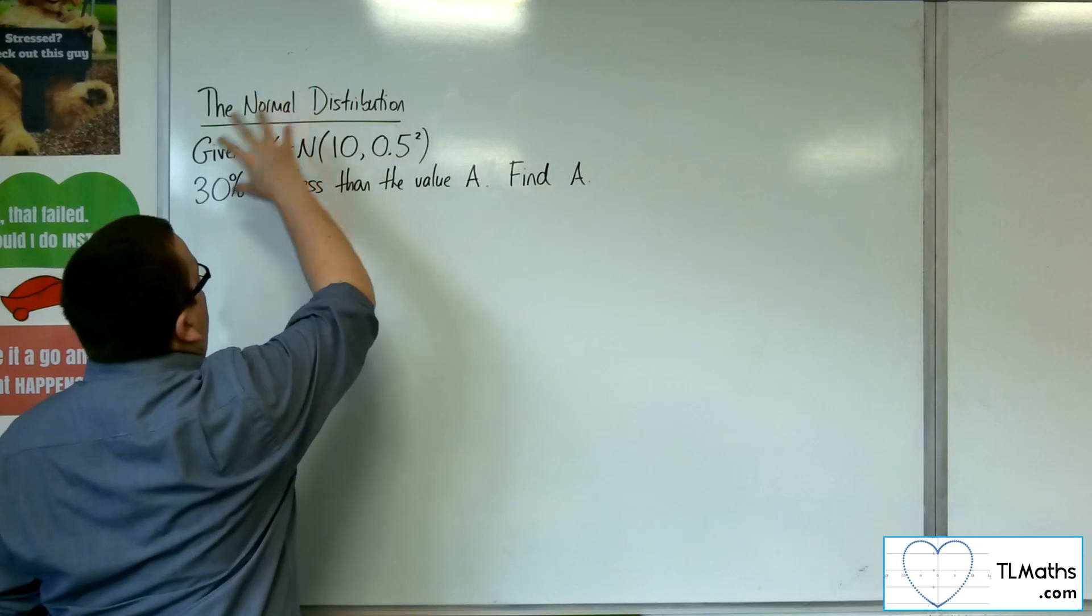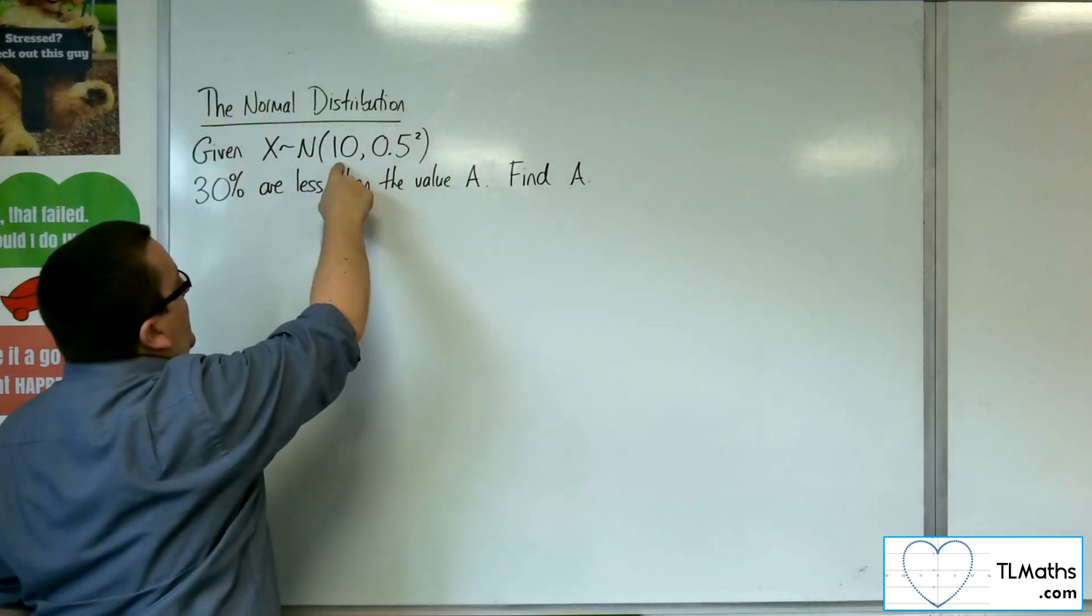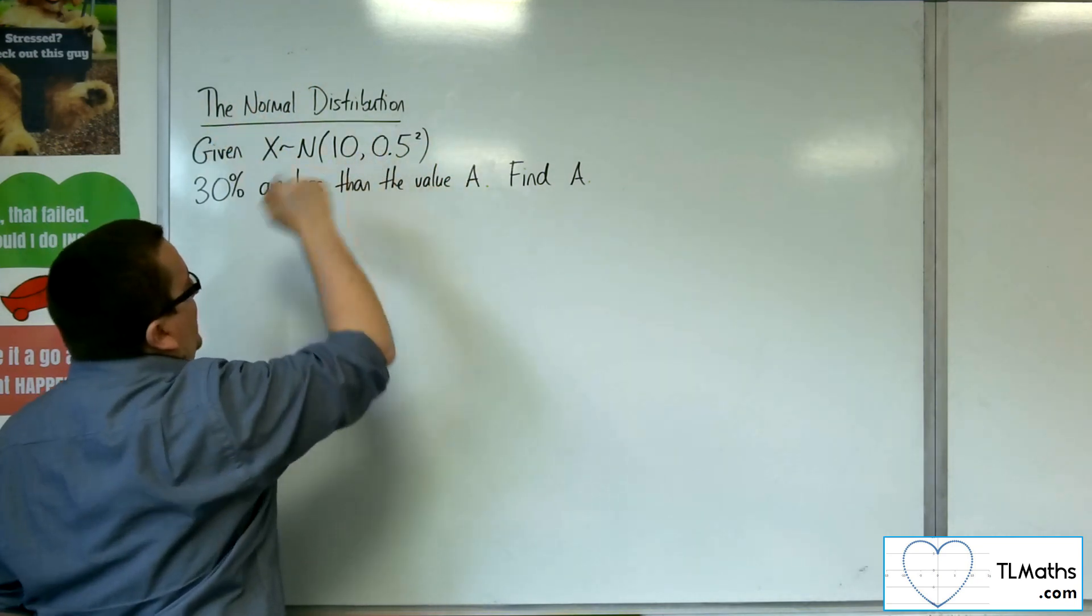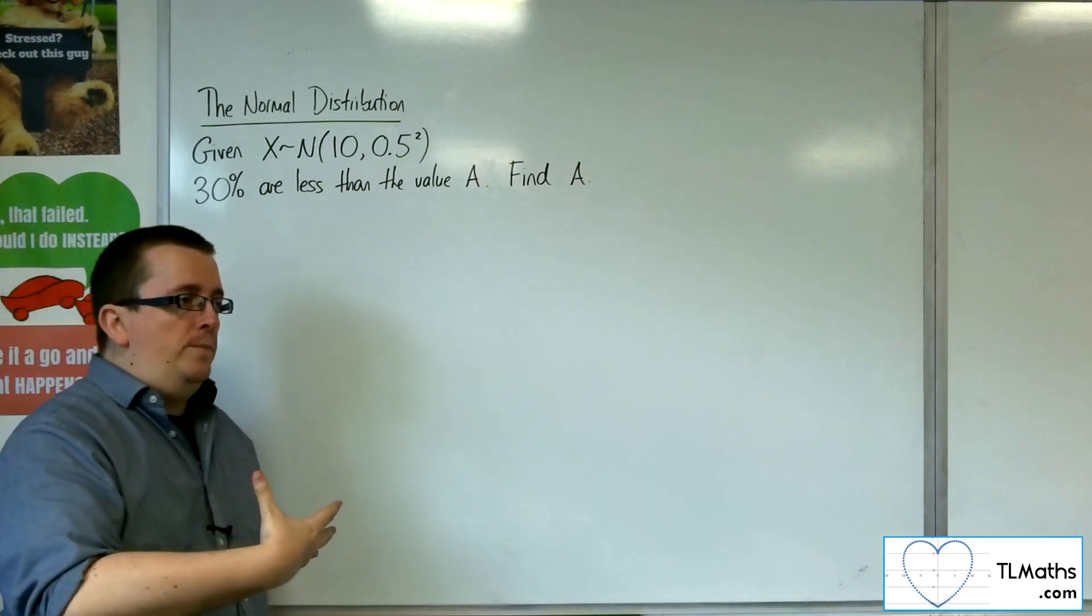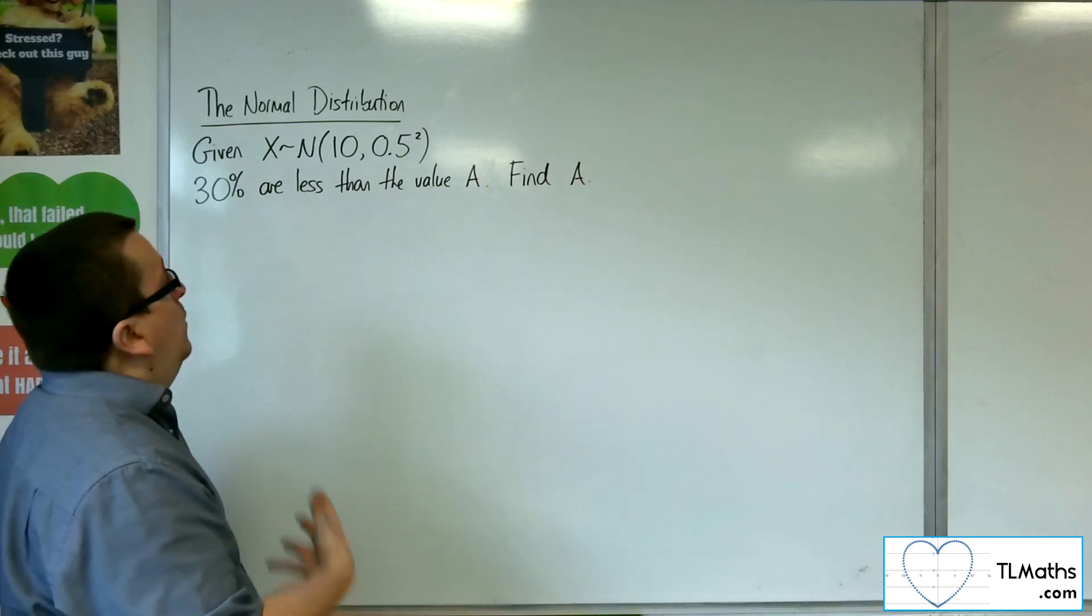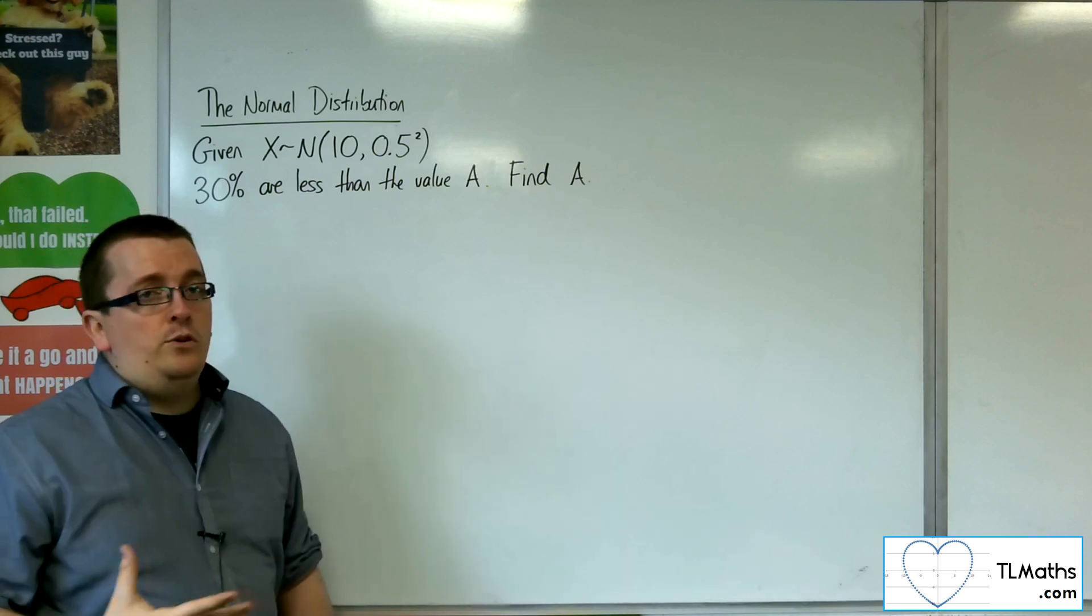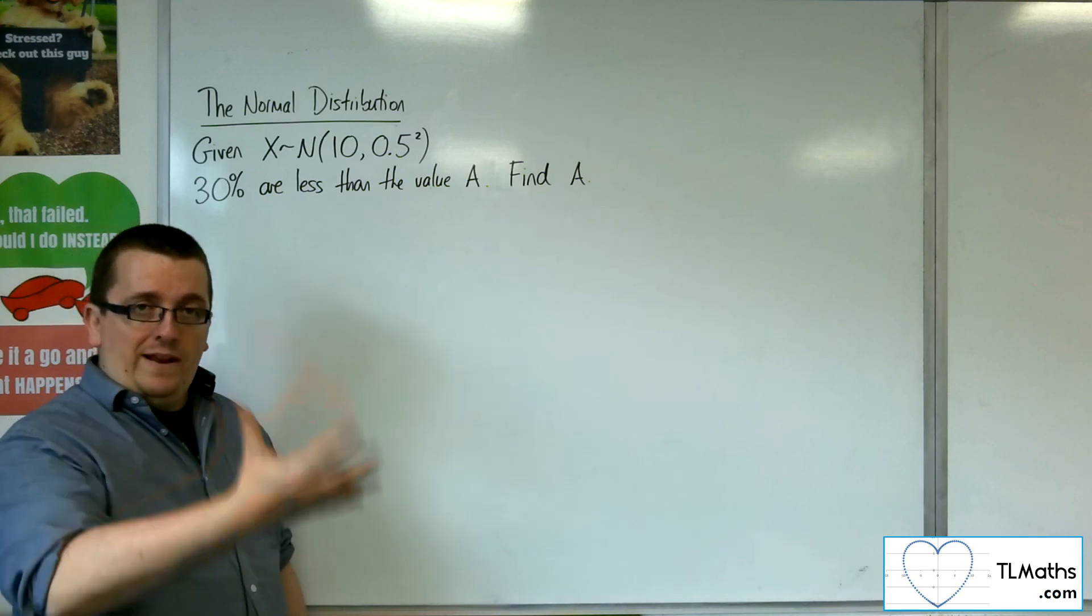So if I gave you a normal distribution with a mean as 10 and a standard deviation of 0.5, and I said that for this normal distribution, 30% were less than a specific value A, and I wanted to figure out that value of A.